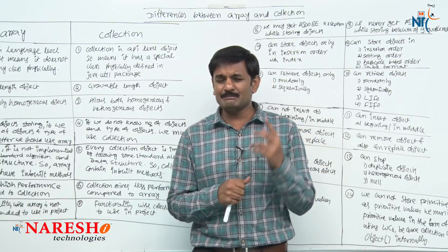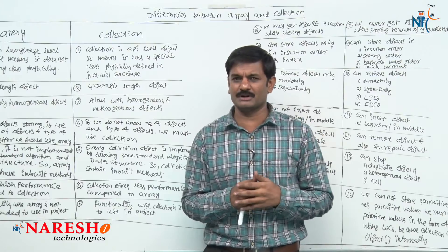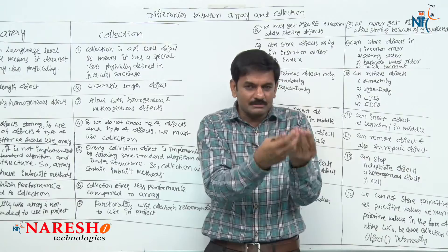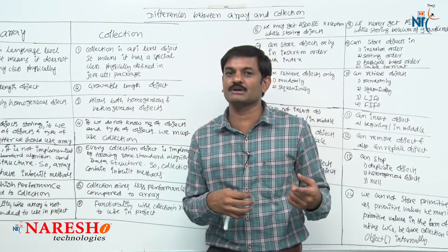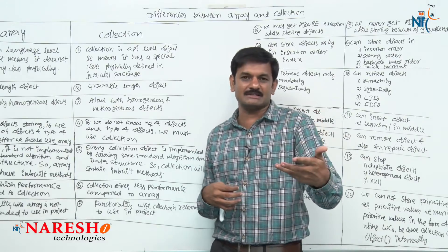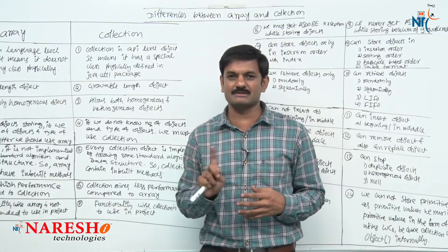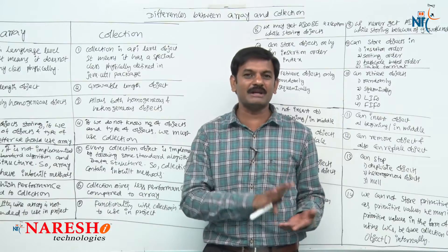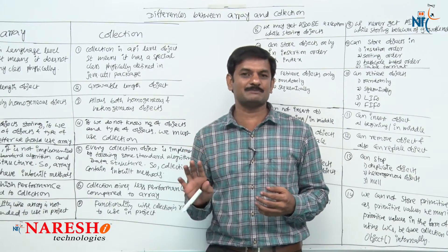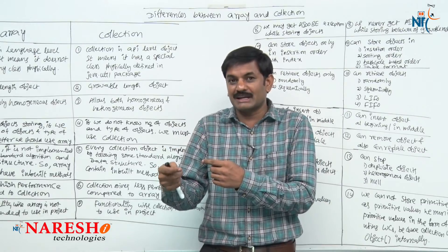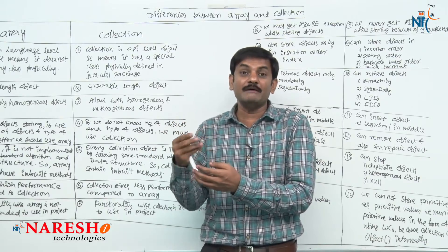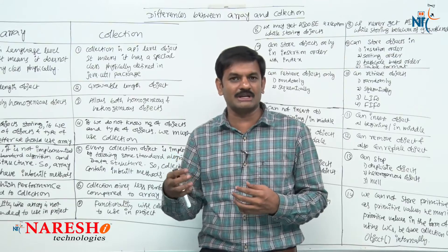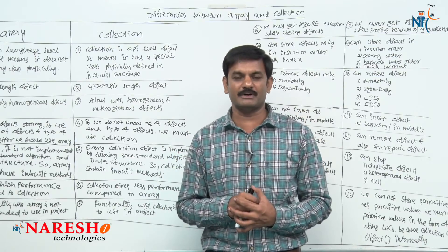Sixth difference — performance: array gives high performance because we can directly access memory to store and retrieve without any additional methods. Whereas collection gives less performance compared to array because we must access collection memory via methods — calling add() to store and get() to retrieve. Because these methods execute in addition to storing and retrieving, collection performance is less compared to array.